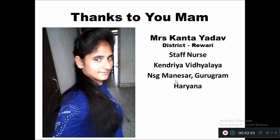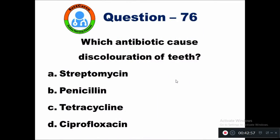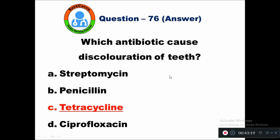Questions 76 to 86 were prepared by Mrs. Kanta Yadav from District Rewari, Haryana — a staff nurse in Kendriya Vidyalaya nursing manager, Gurugram, Haryana. Thank you ma'am for giving these 10 questions for our subscribers. Question 76: Which antibiotic causes discoloration of teeth? Option A streptomycin, B penicillin, C tetracycline, D ciprofloxacin. Tetracycline antibiotic leads to yellowish discoloration of the teeth and gums.